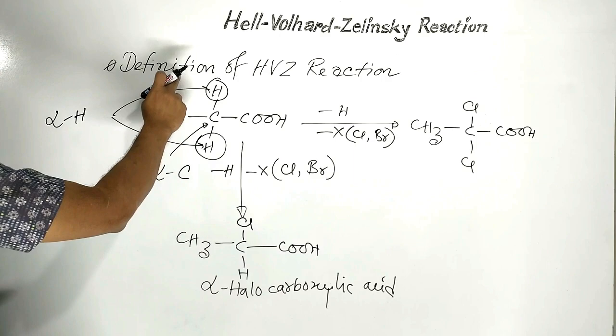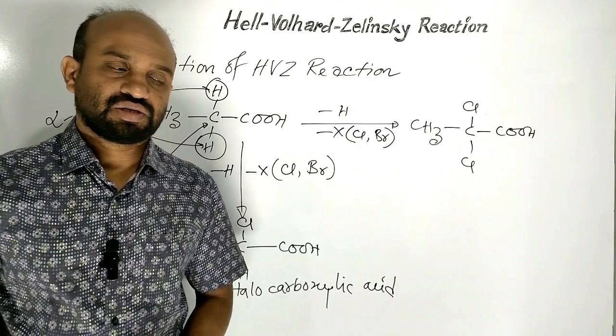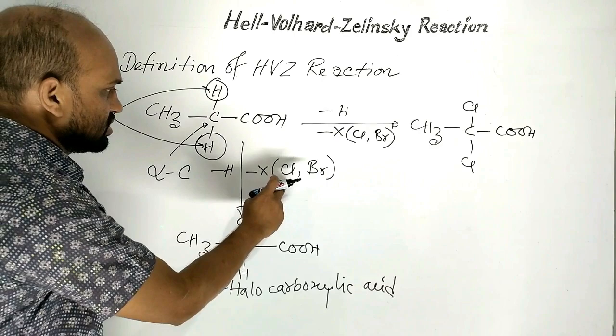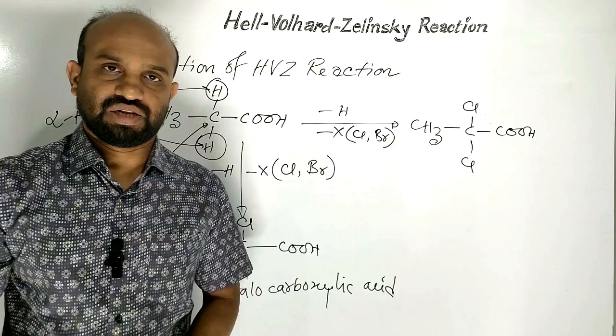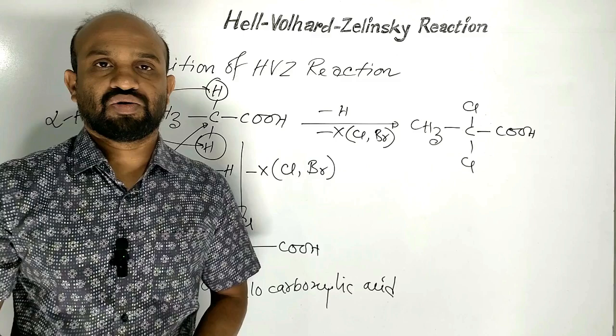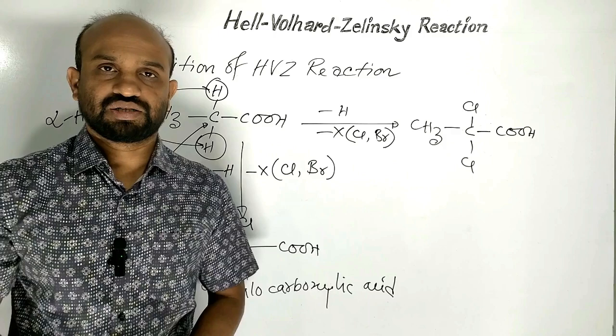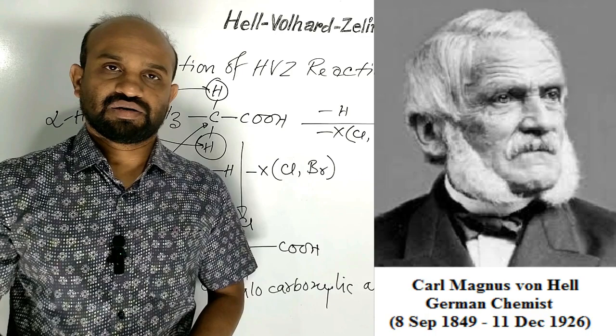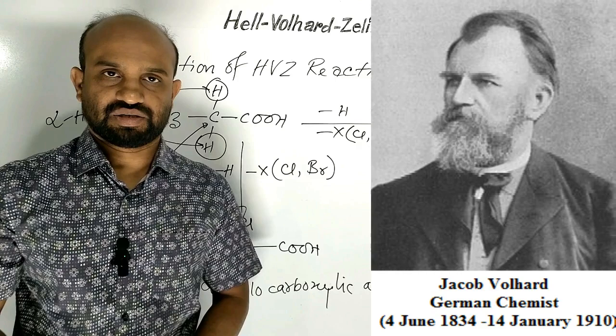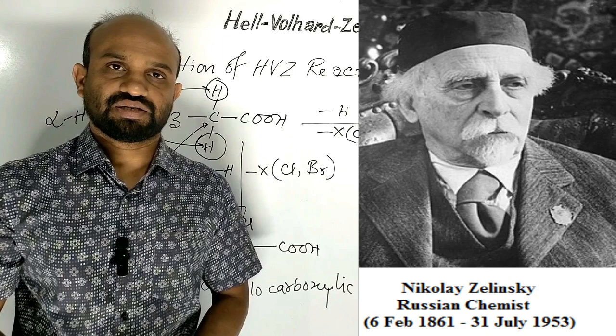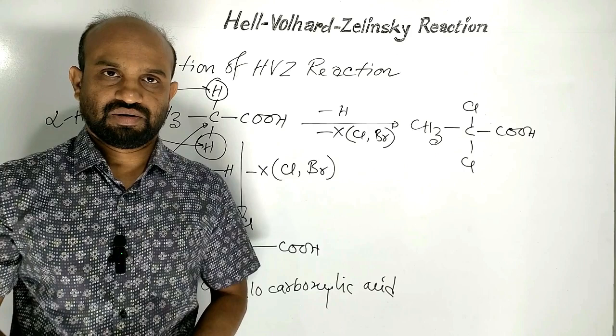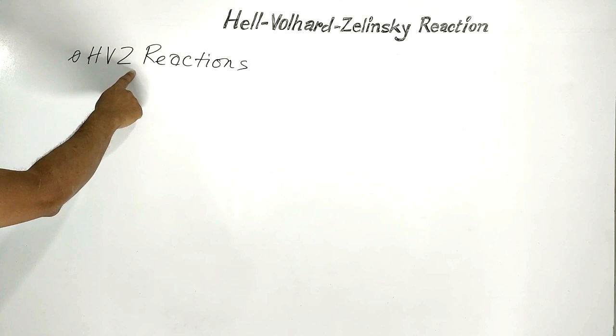The definition of the HVZ reaction: it is the reaction by which alpha hydrogen atoms are replaced by halogen atoms to form alpha halocarboxylic acid. This reaction is named after German chemists Von Hell and Jacob Volhard and Russian chemist Nikolai Zelinsky.